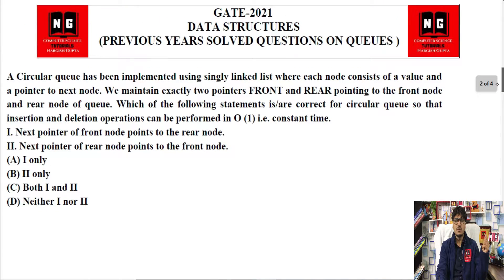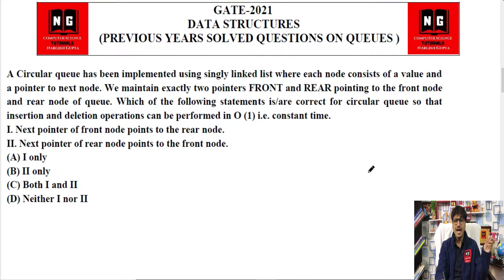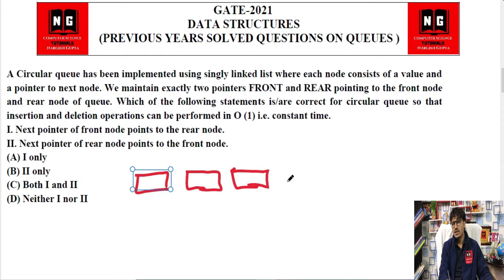Next question is from circular queue. A circular queue has been implemented using singly linked list where each node consists of a value and a pointer to the next node. So basically, singly linked list has two fields: one is called the data field and second is called the address field. This question is also related to that. We are implementing a circular queue using singly linked list. When implementing with singly linked list, the last node's address will point to the first node.